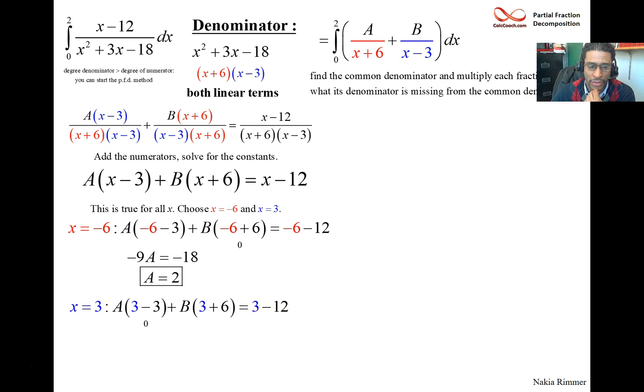Do it again for x equal 3. It'll kill the A term, even though you know what A is. You can pick any x you want, but pick this x equals 3. So you don't have to worry about A at all. And you get the fact that 9B is negative 9.